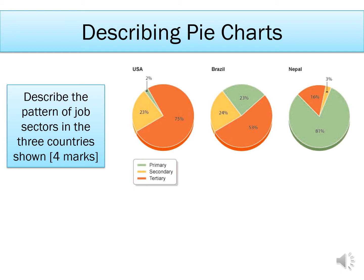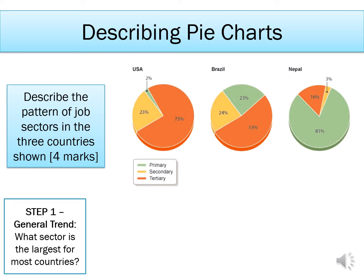You can see we've got three pie charts here showing the different job sectors that make up the economy of three different countries: the US, Brazil, and Nepal. The question says describe the pattern of job sectors in the three countries shown. Every time you're asked to describe the pattern within a figure like a pie chart, bar chart, or line graph, you always use GCSE to help you structure your answer. The G is for general trend — looking at these pie charts, you need to think about which sector on the whole seems to be the largest for the majority of the countries shown.